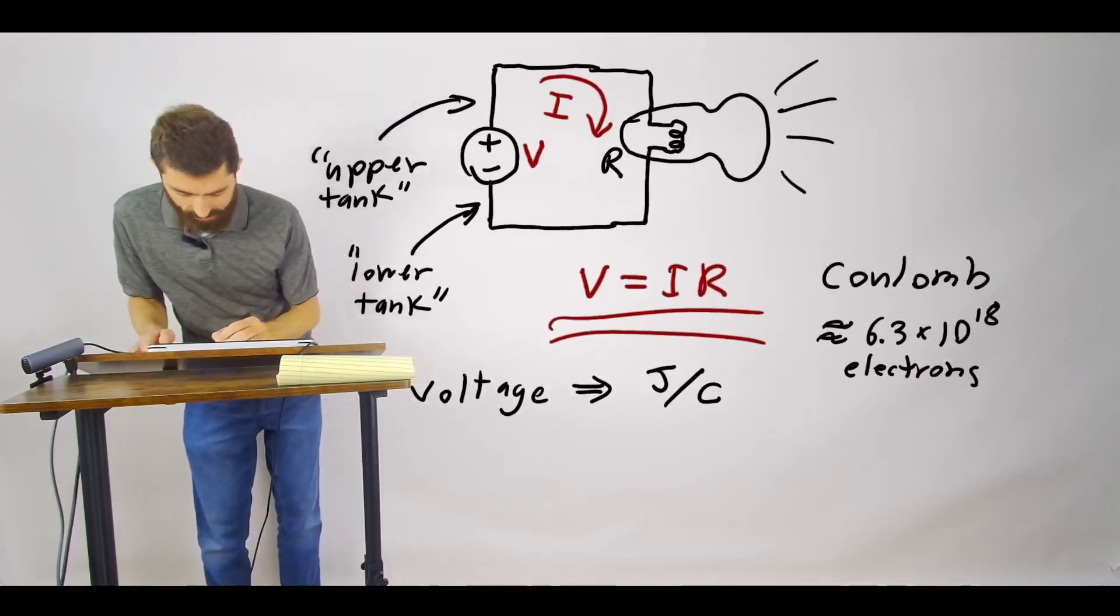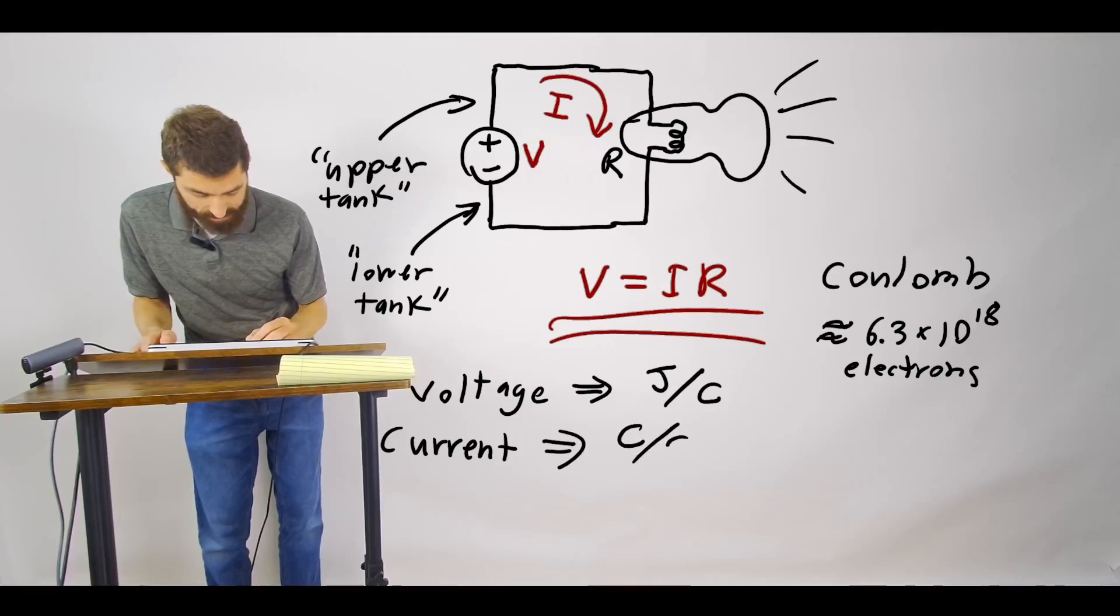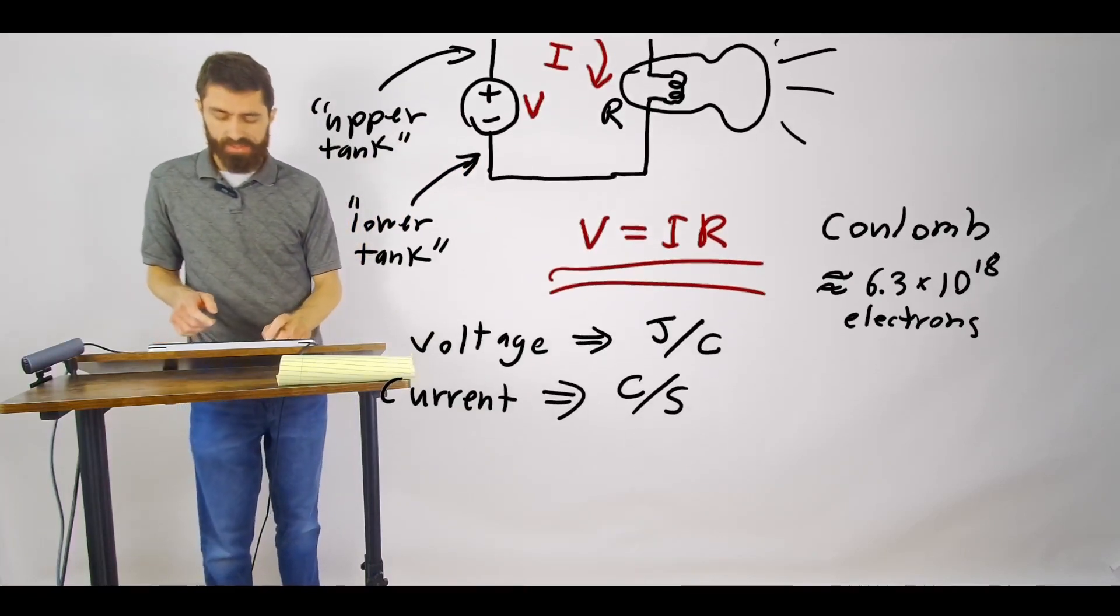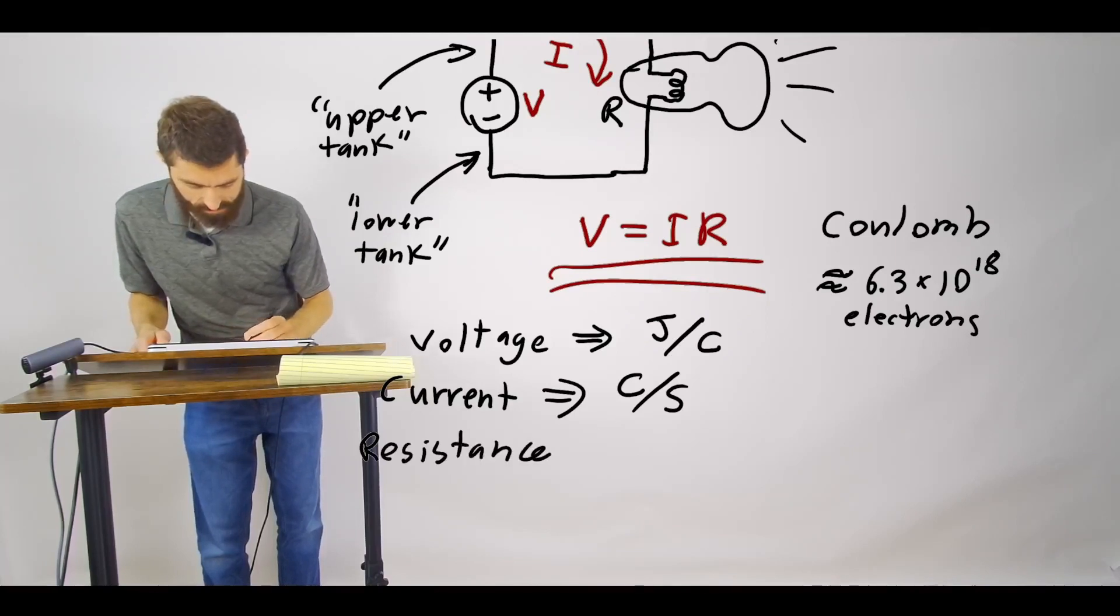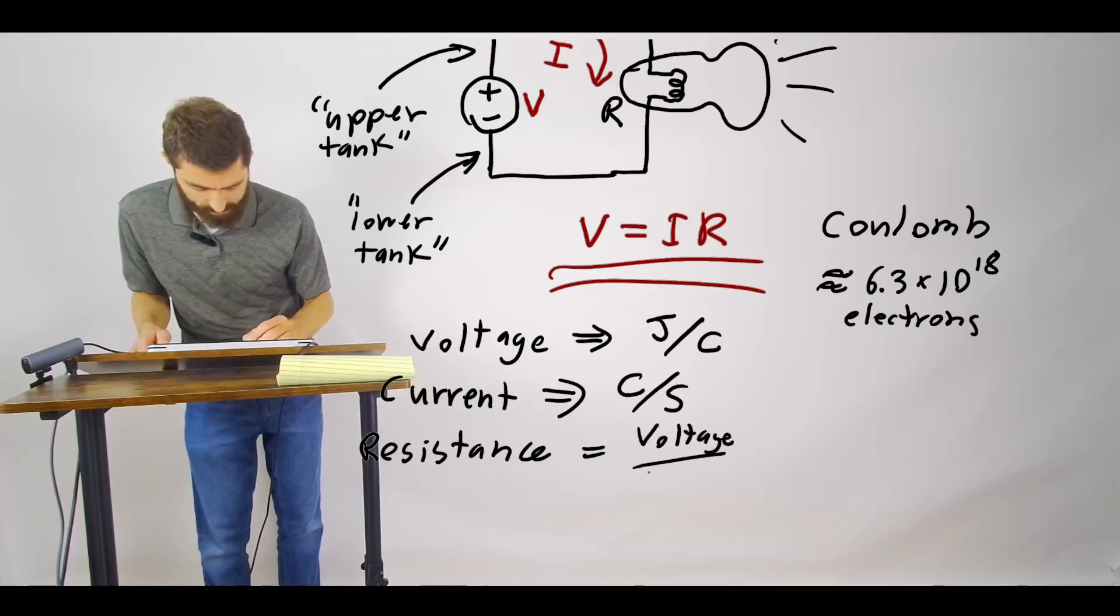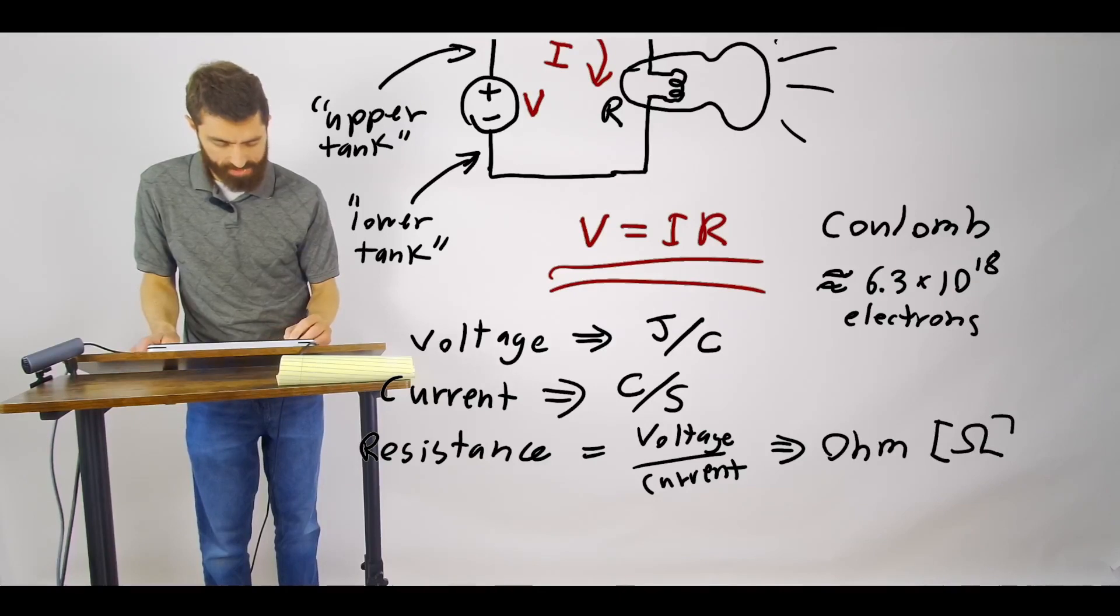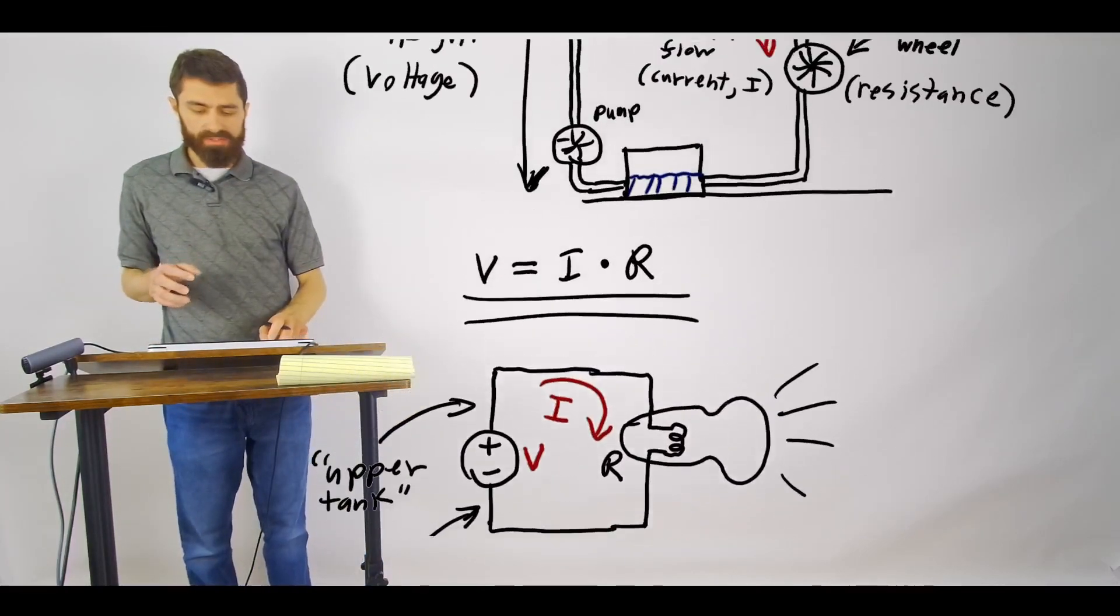So then current, instead of gallons per minute, that's going to be coulombs per second, amount of electrons that are flowing by a wire per second. And then we have resistance, resistance and that's equal to your voltage divided by your current. And the unit for that is the ohm and typically that's designated as omega.